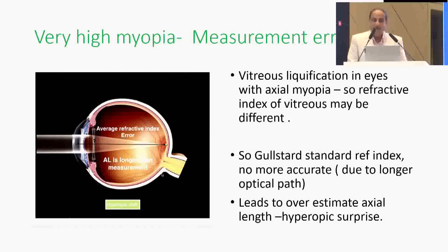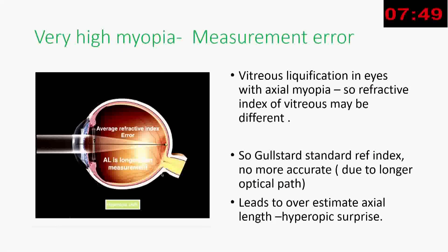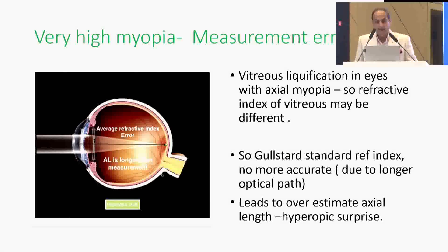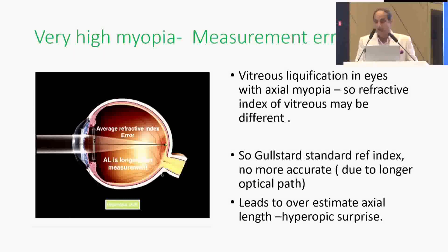Why do we have measurement errors in high myopia? There is vitreous liquefaction in eyes with axial myopia, so the refractive index of the vitreous may be different. Until now the refractive index was a one-size-fits-all, but we now understand that different parts of the eye have different refractive indices. The Gullstrand standard refractive index is no longer accurate due to the longer optical path, and it leads to an overestimate of axial length, giving a hyperopic surprise.